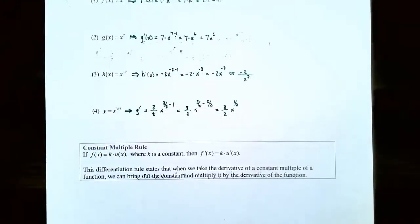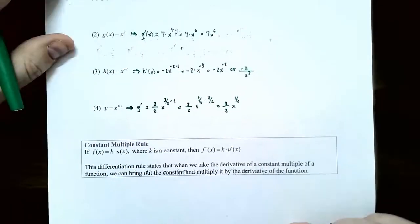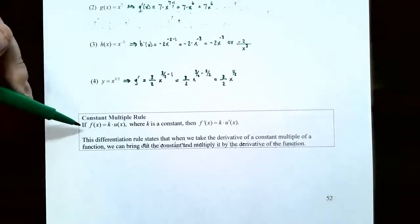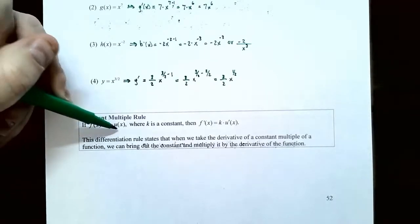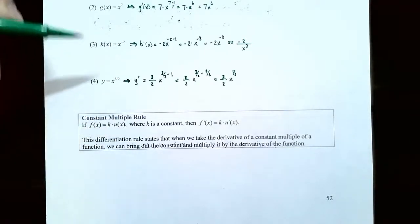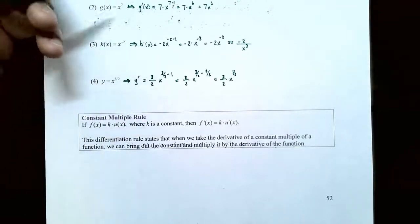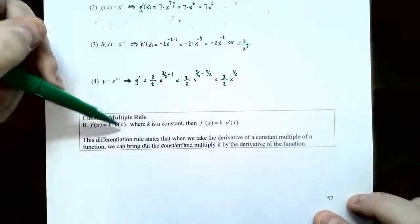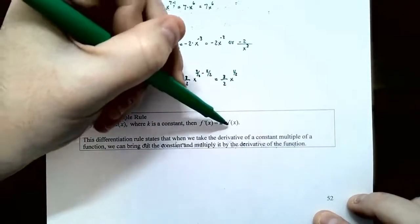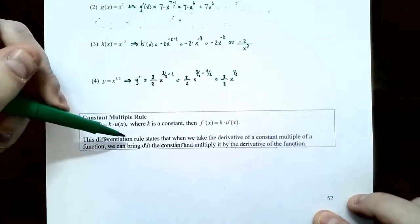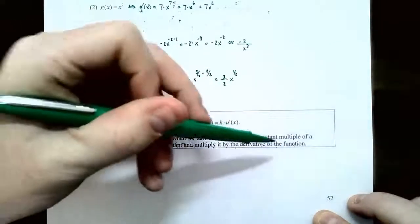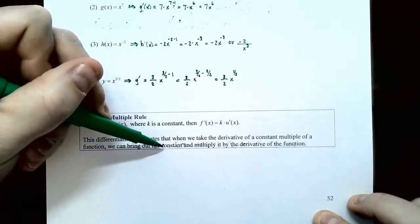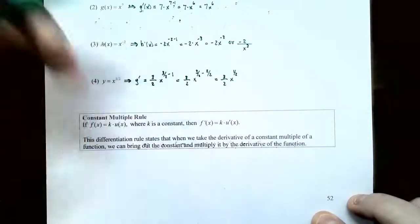So far we've had the constant function rule and the power rule. Now let's talk about the constant multiple rule. If f of x equals a constant k times a function u of x, where k is the constant, then f prime of x equals k times the derivative of u. This differentiation rule states that if you want to take the derivative of a constant multiple, you bring out the constant — in other words you keep the constant — and you multiply by the derivative of the remaining function.